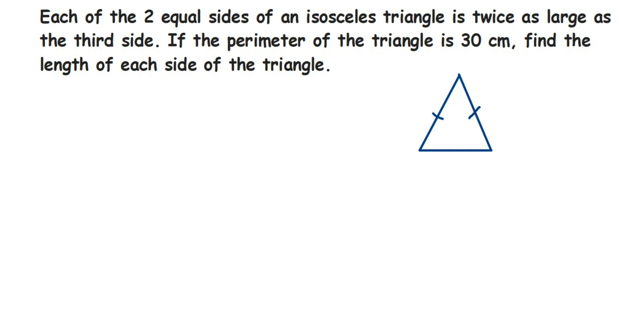Now what is given in the question? They have given that each of two equal sides of the isosceles triangle is twice as large as the third one.